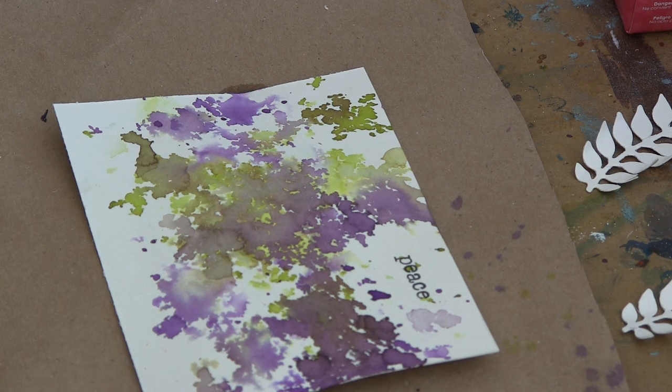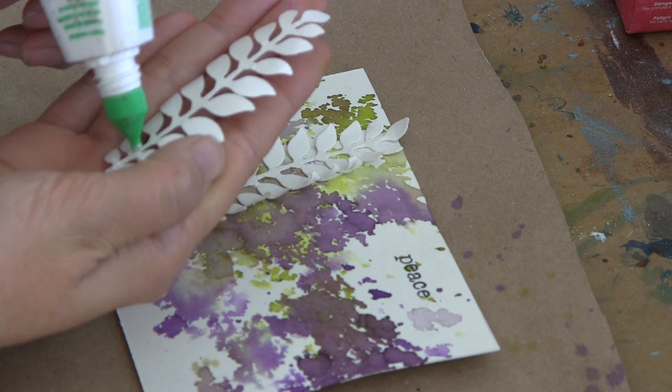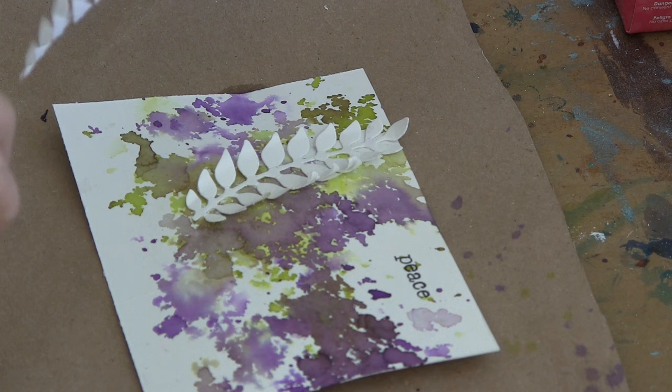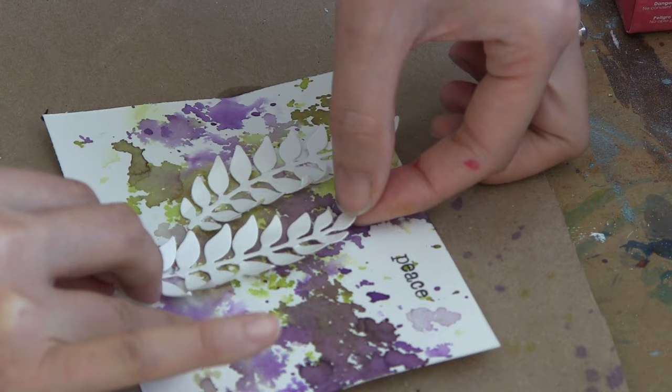So I added just one word, a word that's nice to use for the season and the feeling that I'm going for in this project. And I added just little dots or little crosses of adhesive. This is Tombow Mono Multi Glue along the length.